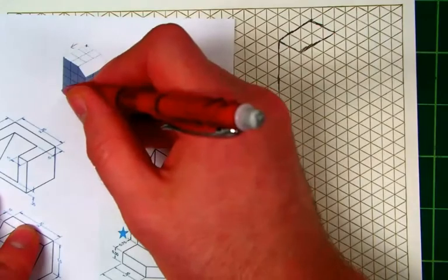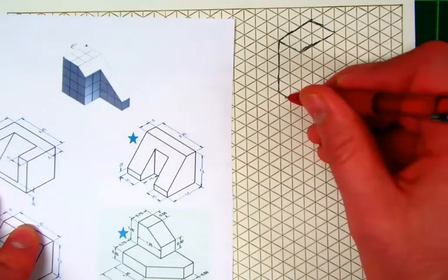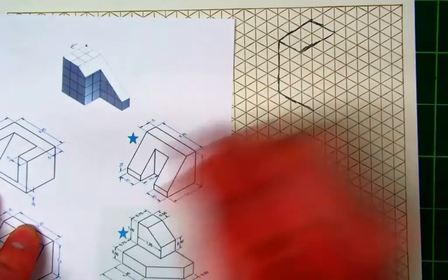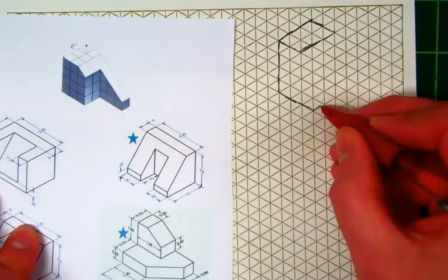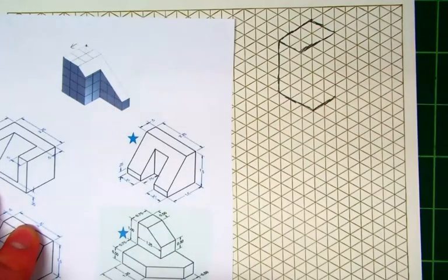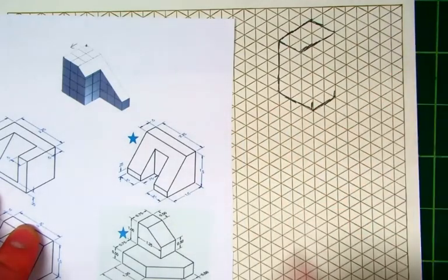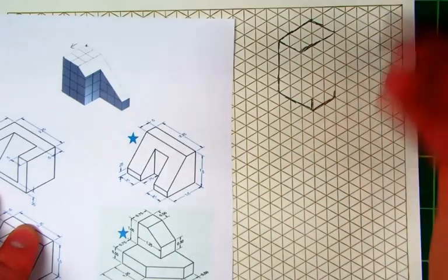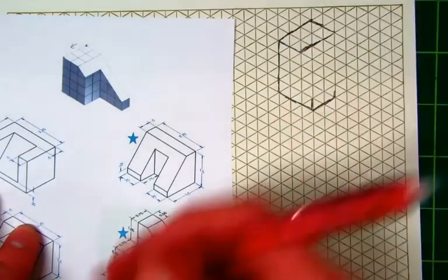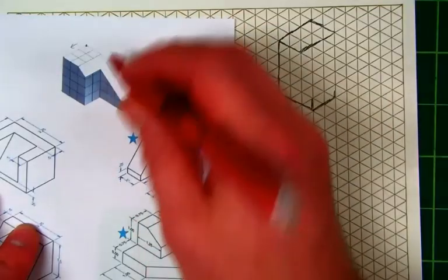And then down here I can see that it goes to the right 3 more. So 1, 2, 3. And then it goes back 2. So 1, 2. And then it goes up some direction at both of these. Or up some amount, I should say. Not direction. Up some amount. But we don't know how high it goes up. We just know that it goes up. We'll figure that out in a second.